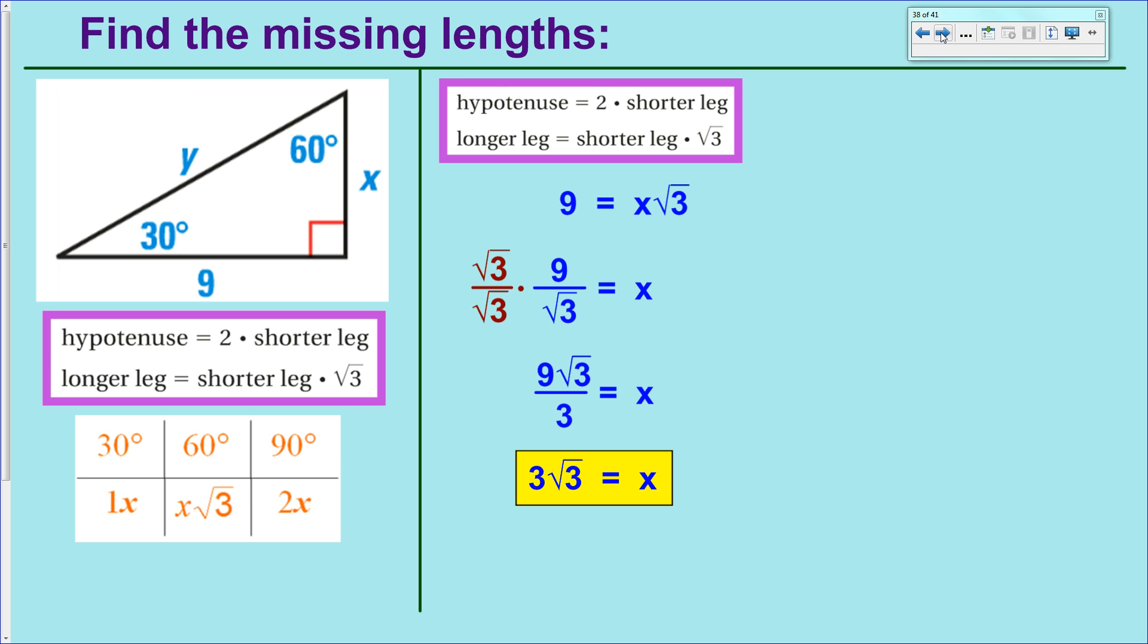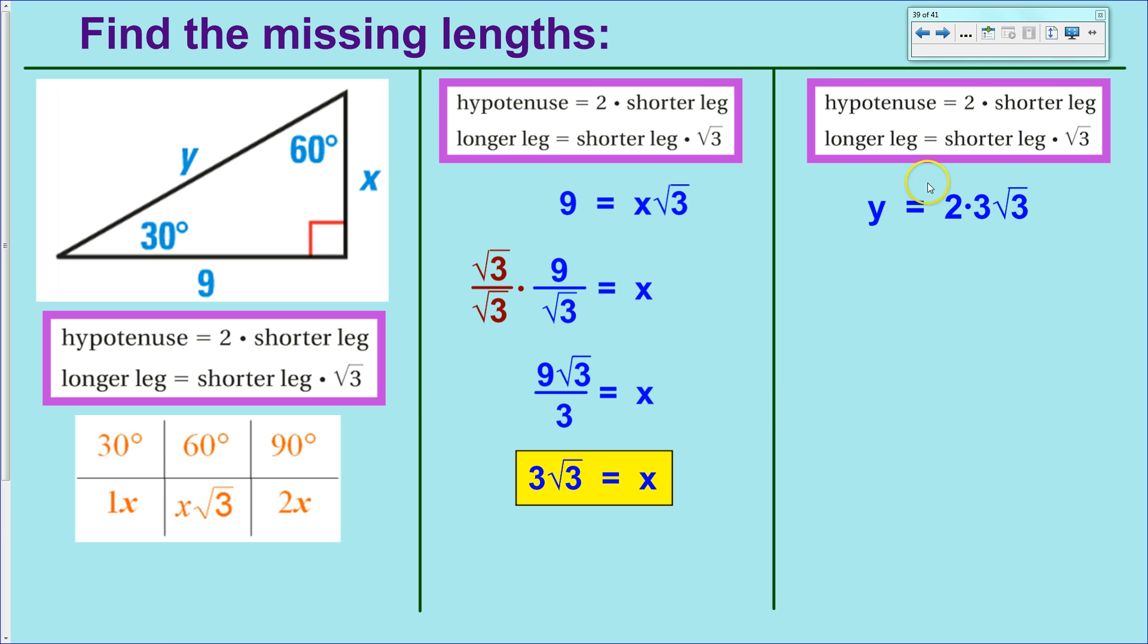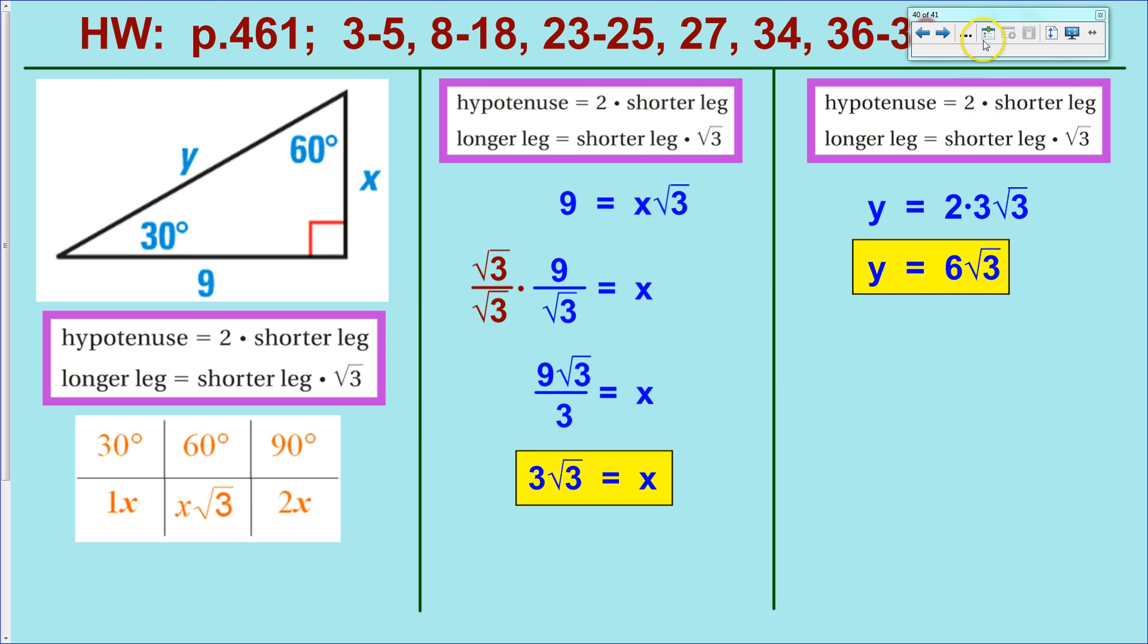Then, we need to go on to finding y. So, now we know the hypotenuse and the shorter. Well, we don't know the hypotenuse, but we would like to know. But, we do know the shorter leg. And, we would like to know the hypotenuse. So, there we go. So, set up another equation. Y, our hypotenuse, equals 2 times the length of the shorter leg, which is what we just found. From there, a little bit of simplification. And, we've got it going on there. So, there's 6 times the square root of 3.